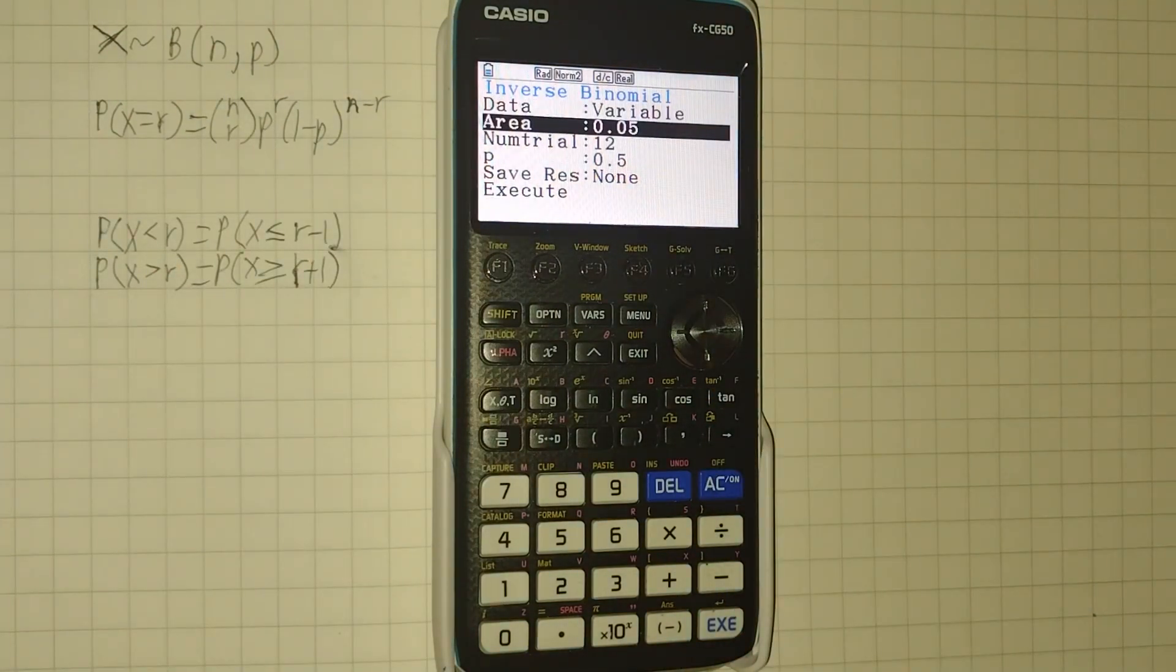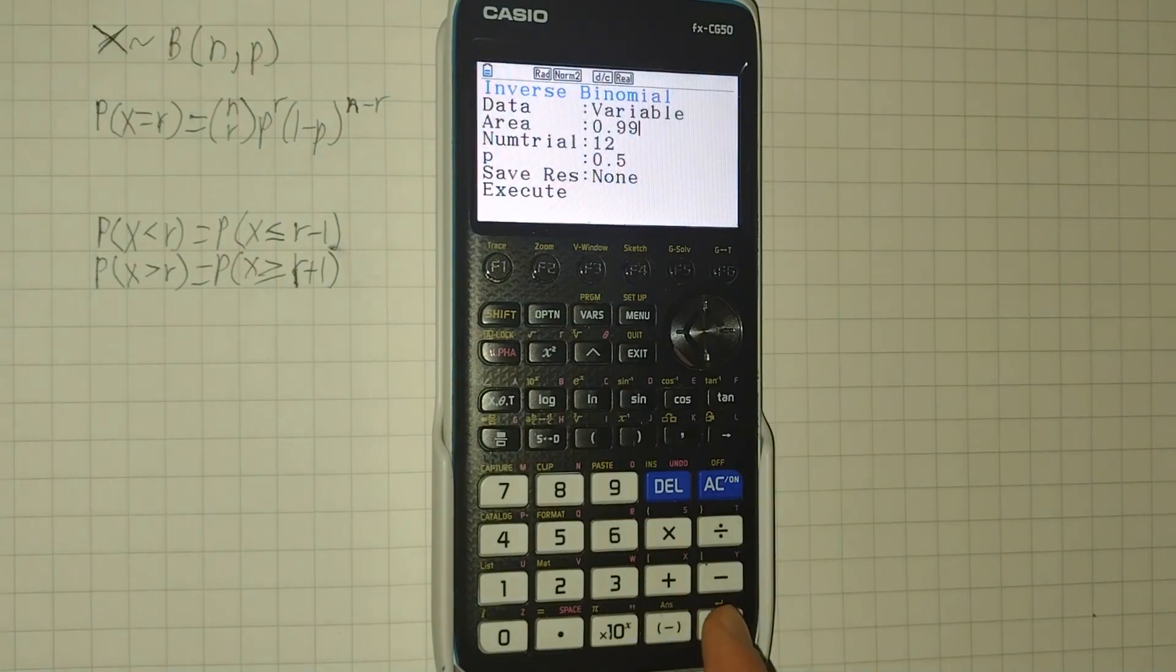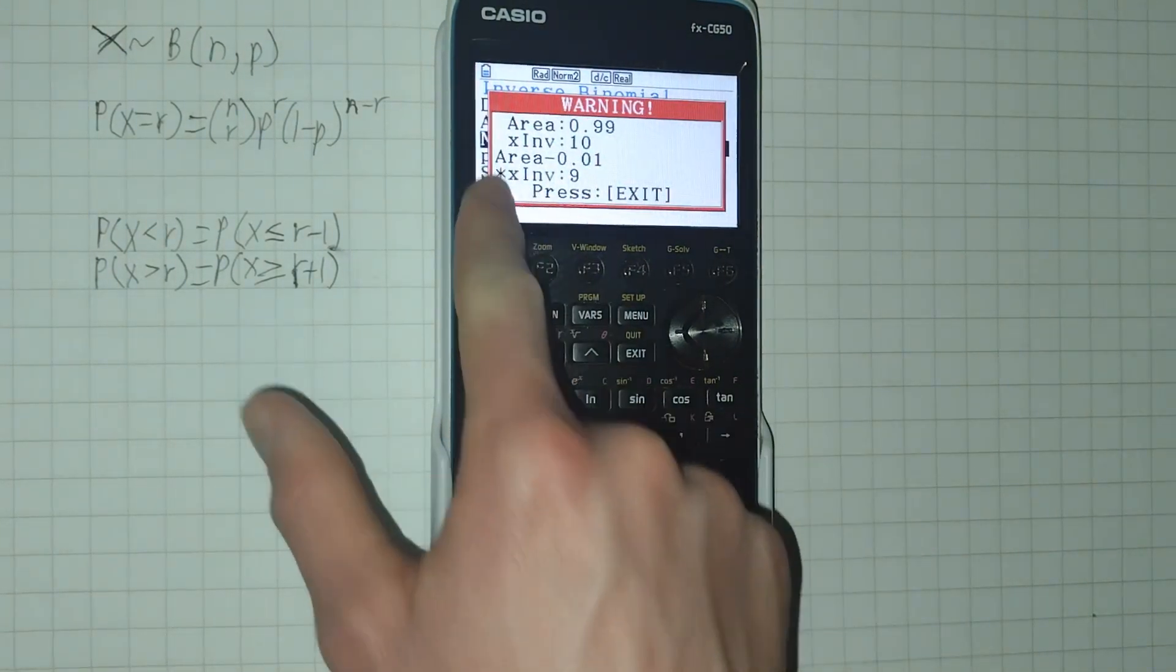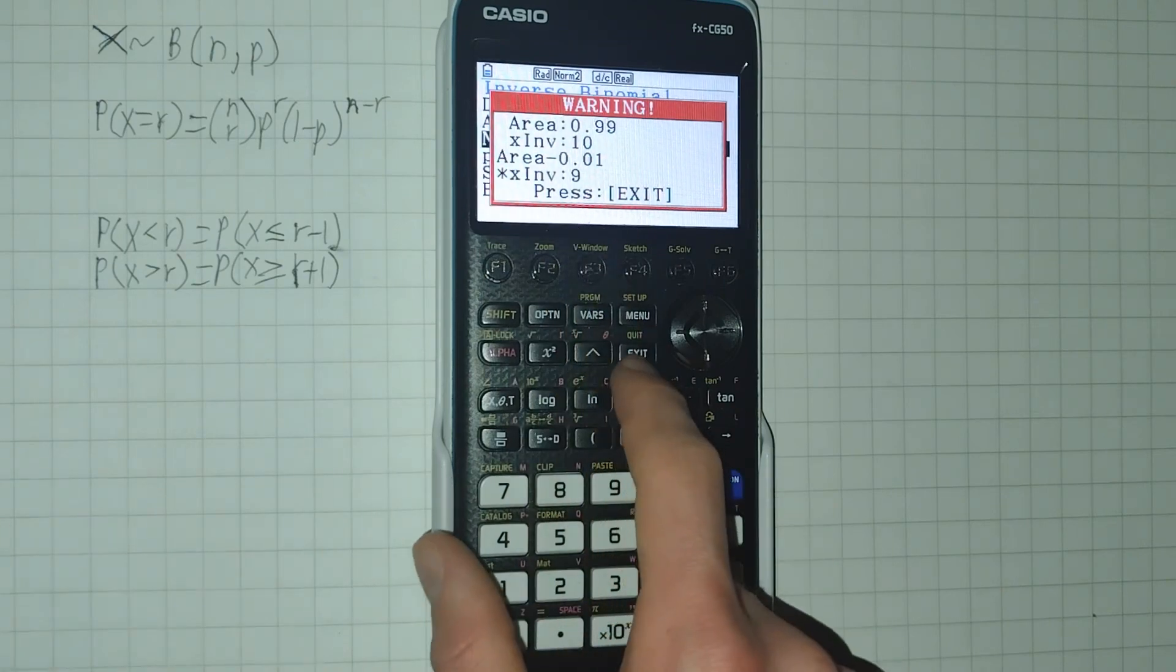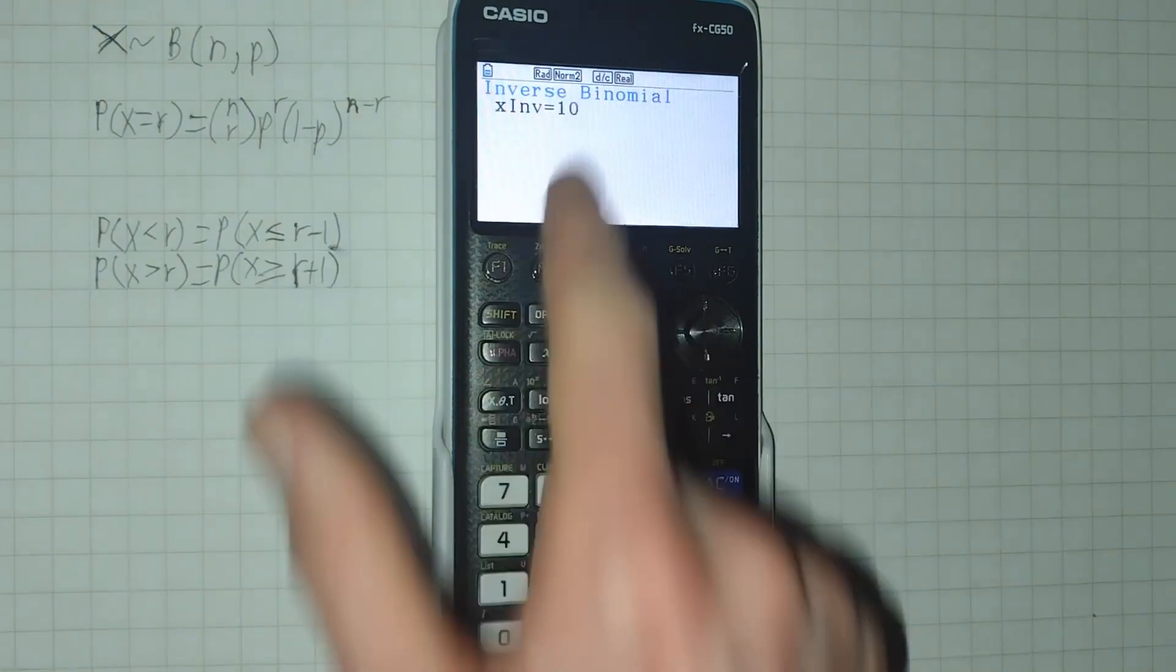Let's say we want a probability of greater than 99% or 0.99. Sometimes you get this warning, you can just ignore it, click exit, and we get our value of 10.